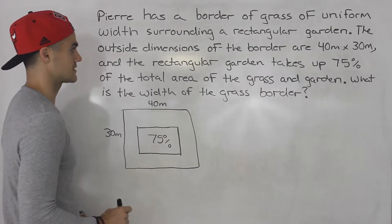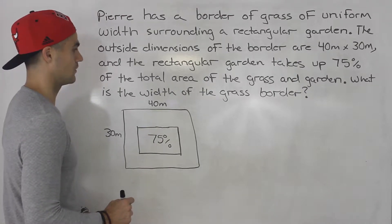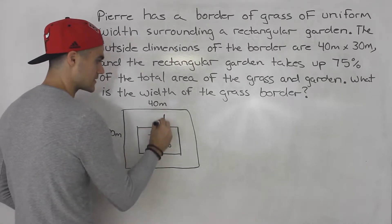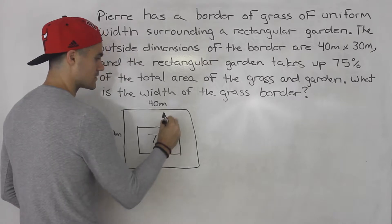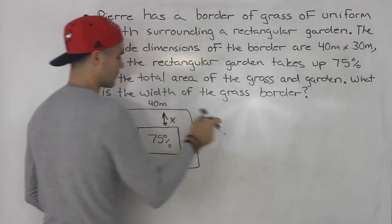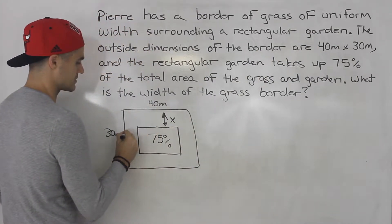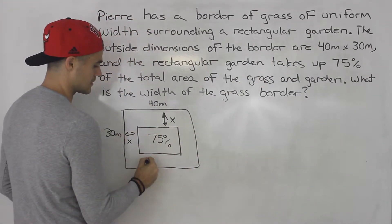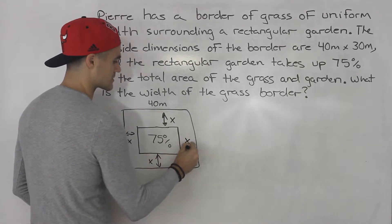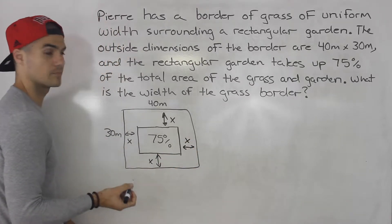So they're asking what is the width of the grass border. So they're asking what's this width here. So how about we just label that as x. And because it's a uniform width all around we know this is going to be x, this is going to be x, and then this is going to be x as well.